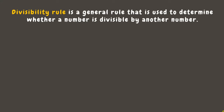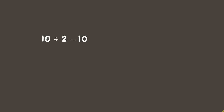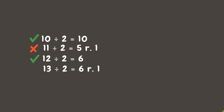Let's find out the divisibility rule for 2 by observing the following. 10 divided by 2 is 5 — no remainder, so 10 is divisible by 2. 11 divided by 2 is 5 remainder 1 — not divisible. 12 divided by 2 is 6 — divisible. 13 divided by 2 is 6 remainder 1 — not divisible. 14 divided by 2 is exactly 7 — divisible. 15 divided by 2 is 7 remainder 1 — not divisible.